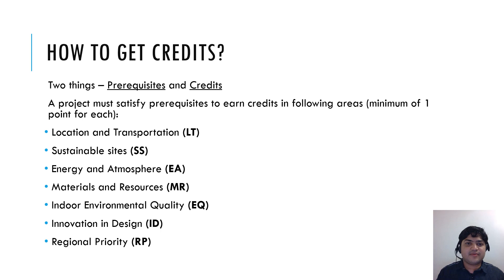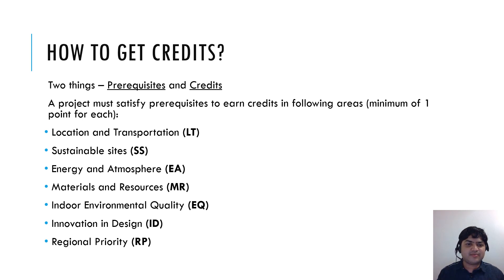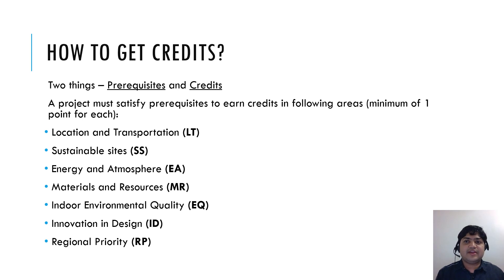So how do you get credits for these projects? Any project must follow two things: prerequisites and then credits. You have to satisfy prerequisites to earn credits in the following seven categories, and for each category you can get a minimum of one point. You may be familiar with the first five — from location and transport to indoor environmental quality. The last two are innovation in design and regional priority. Innovation in design can be achieved from any improvements made for the betterment of the environment, and regional priority depends on how important the project is for the region with respect to the above five categories.